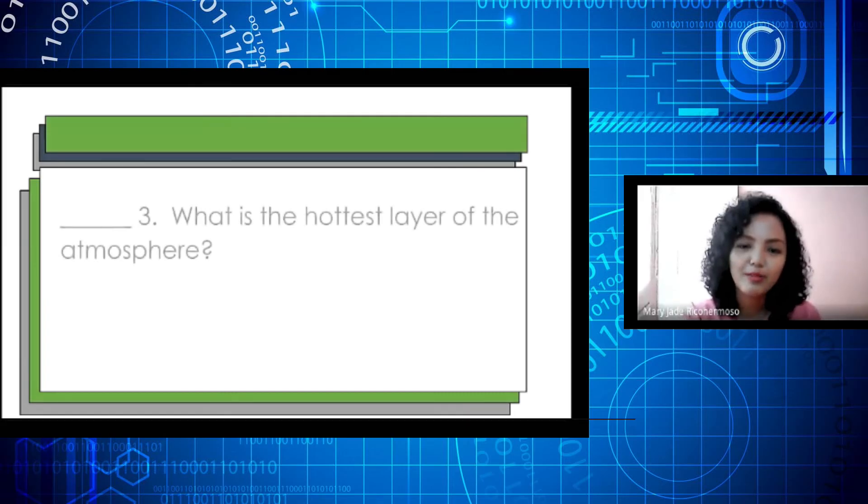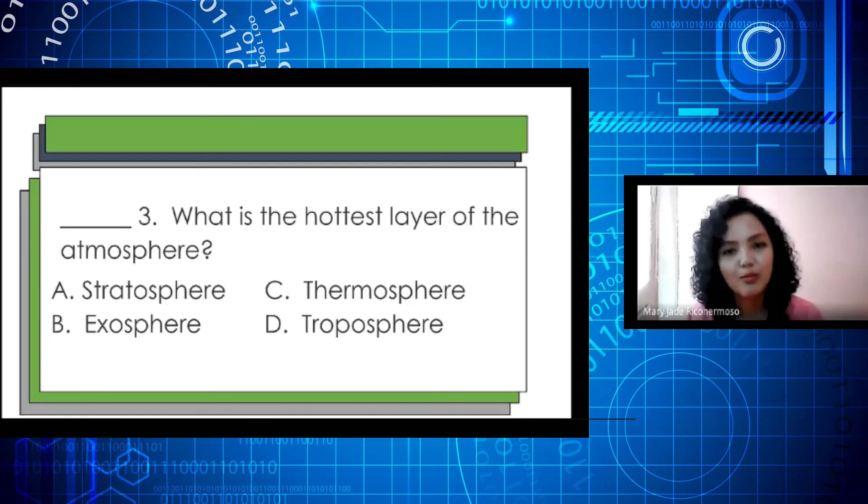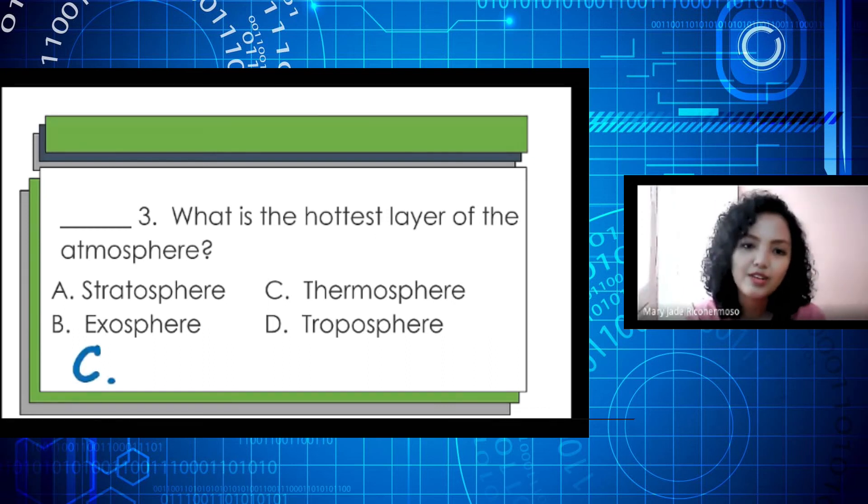Next number, number 3. What is the hottest layer of the atmosphere? A. Stratosphere, B. Exosphere, C. Thermosphere, and letter D. Troposphere. The correct answer is letter C. Thermosphere. Good job again guys!